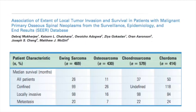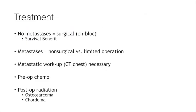Local invasion also impacts mortality, particularly in osteosarcoma patients. Metastases are the major drivers of mortality across tumor types. If the patient has no metastases, given relatively good life expectancy, the goal is en bloc resection with negative margins. If they have metastases, options include non-surgical treatment or a limited operation for stability or palliative pain control. A metastatic workup — at minimum CT chest, ideally PET-CT of chest, abdomen, and pelvis — is always required, plus biopsy for confirmation.